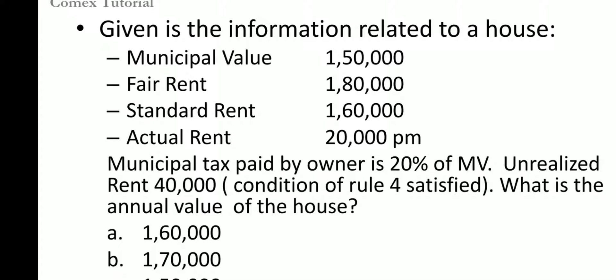First question. Given the information related to a house, let's calculate the annual value. The annual value is fair, standard, and actual. Municipal tax paid by the owner is 20% of municipal value. Unrealized rent is 40,000. Conditions of Rule 4 are satisfied. Then calculate the annual value.